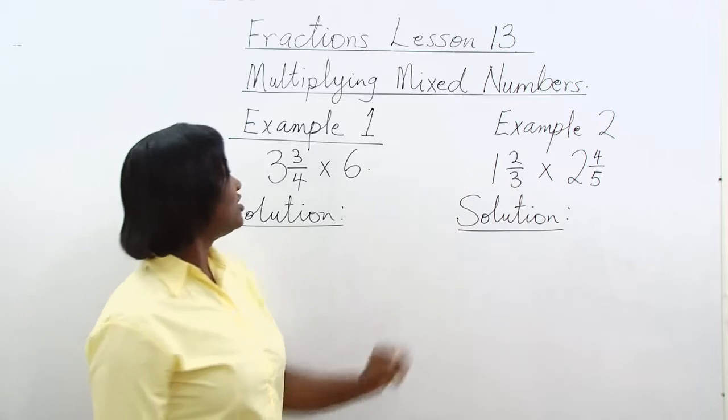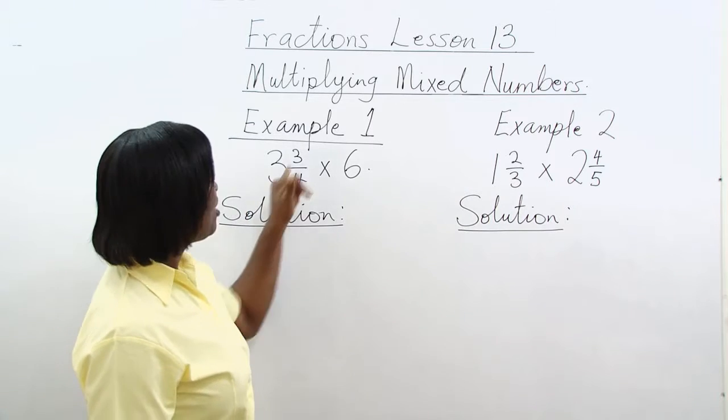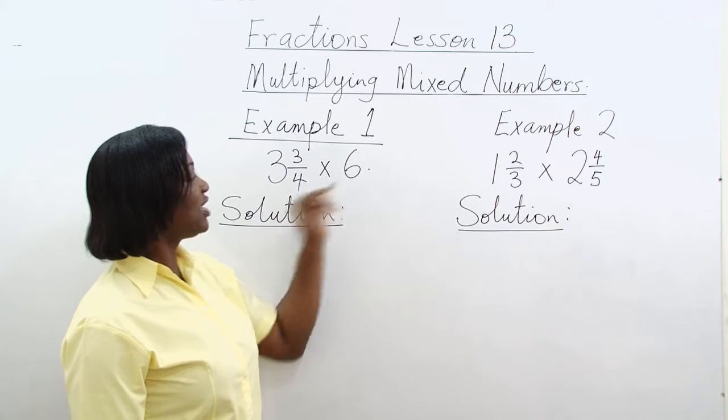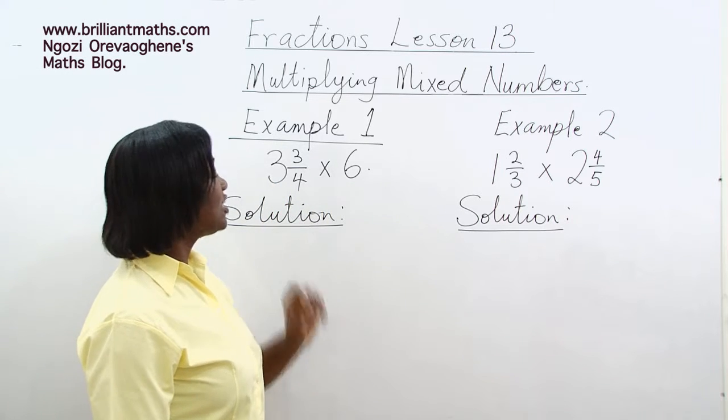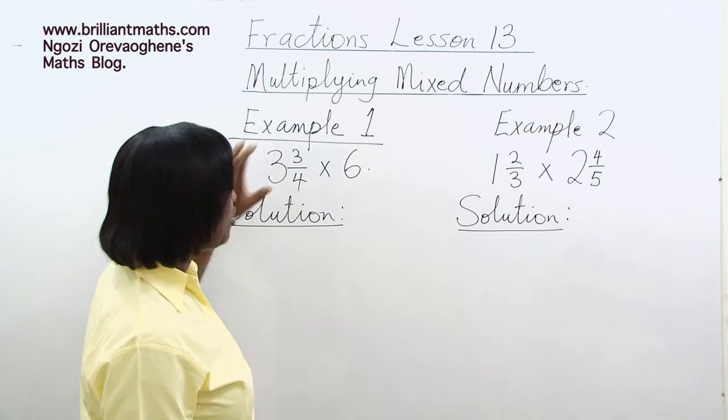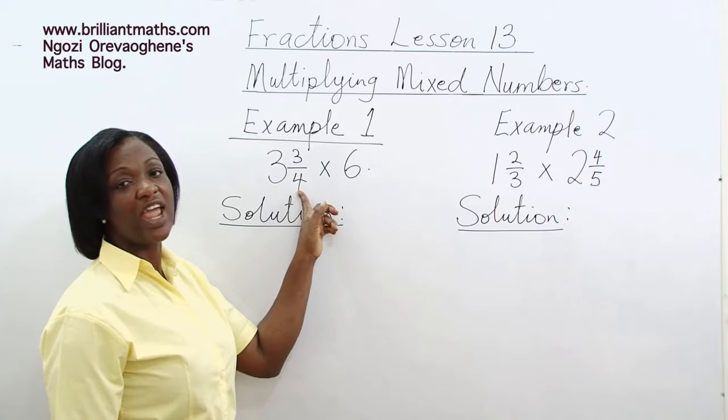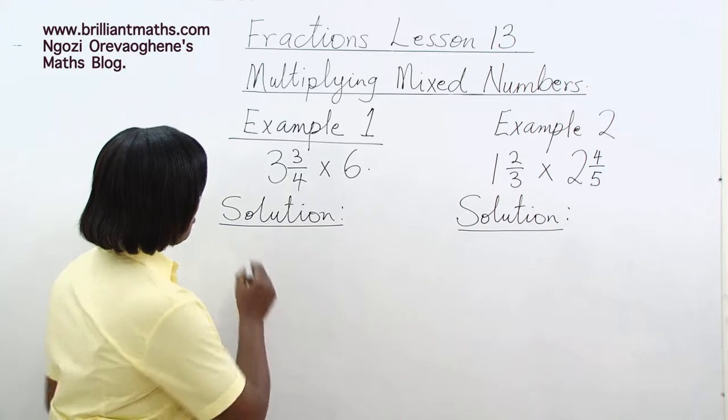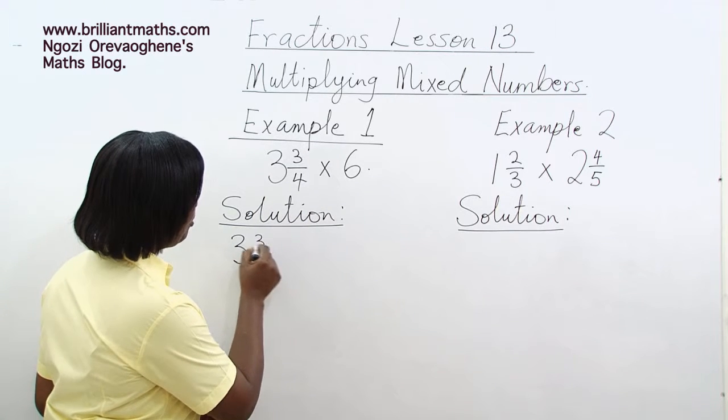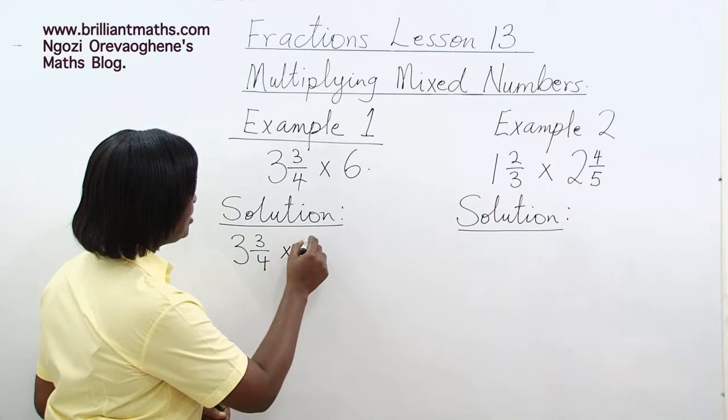We are multiplying mixed numbers. Example 1: 3 3 quarters times 6. 3 3 quarters is a mixed number and 6 is a whole number. But before you can work with 3 3 quarters, you need to change it into an improper fraction. We write the question again: 3 3 quarters times 6.